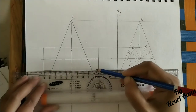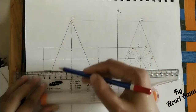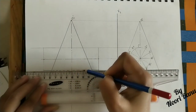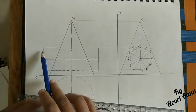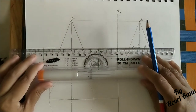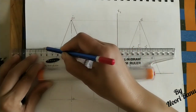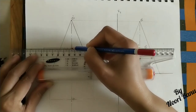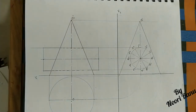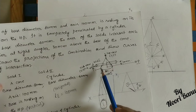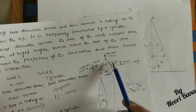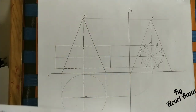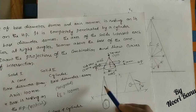The outside part of the cylinder is drawn with a continuous line. The part passing inside the cone is invisible, so it is shown as a dashed line. In the front view, the combination appears as the triangle (cone) with a rectangle (cylinder), with appropriate continuous and dashed lines.